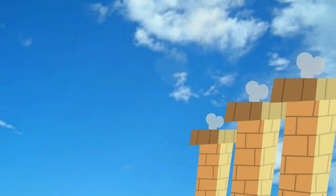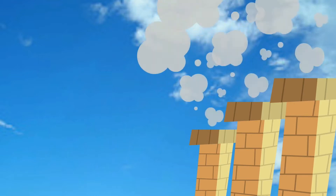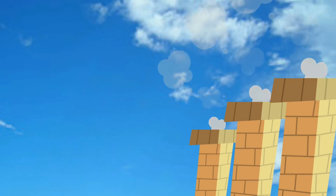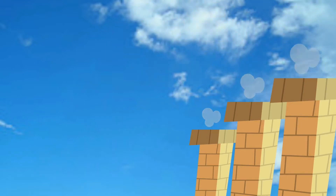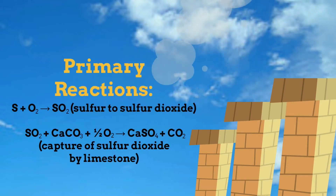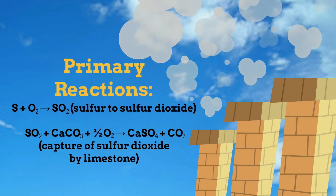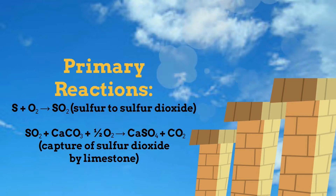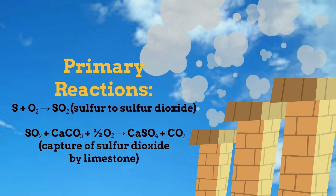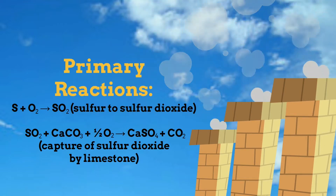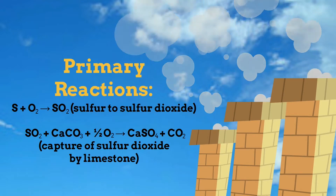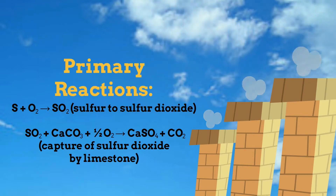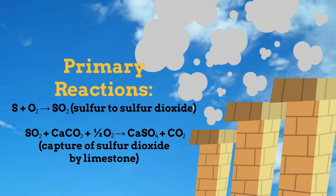There are two primary chemical reactions we need to keep in mind for this scenario: the conversion of sulfur to sulfur dioxide, and the capture of that sulfur dioxide using calcium carbonate, also known as limestone. Both reactions have been balanced to ensure the number of constituents on both sides are equal. For the capture of sulfur dioxide by calcium carbonate, converting to calcium sulfate in the second equation, there is one atom of calcium on both the reactant and product side.